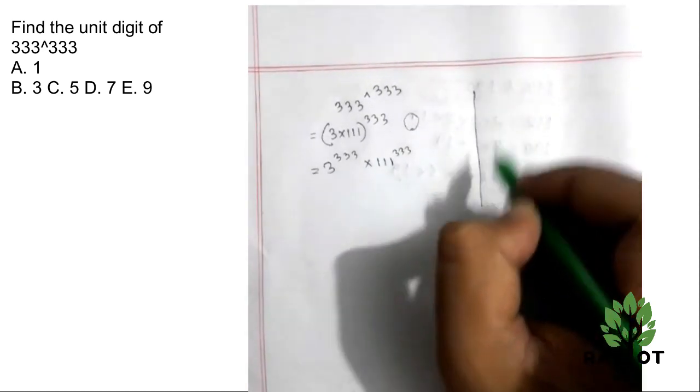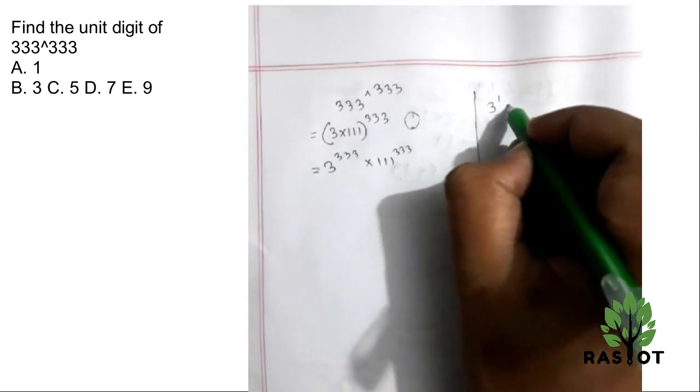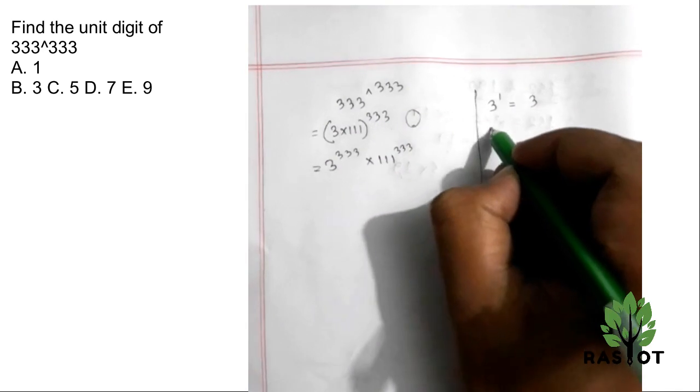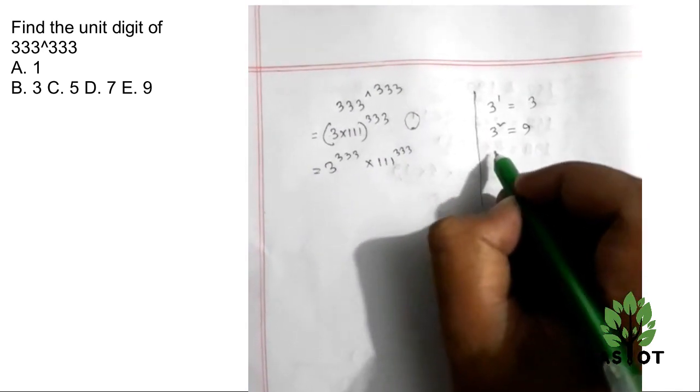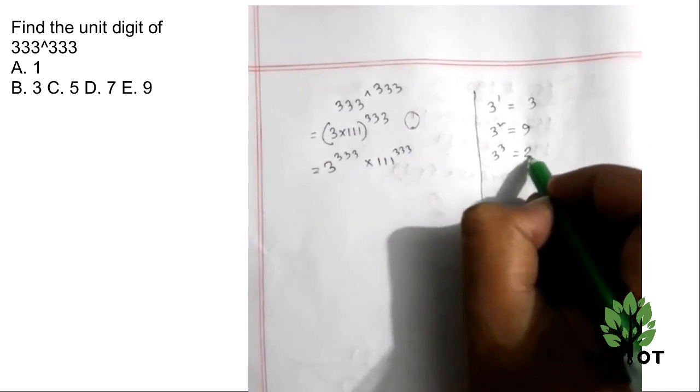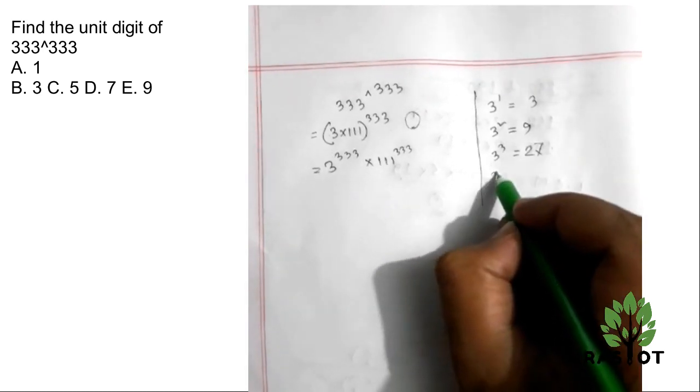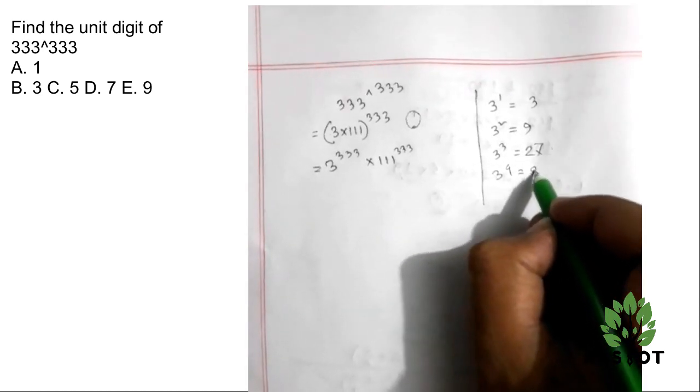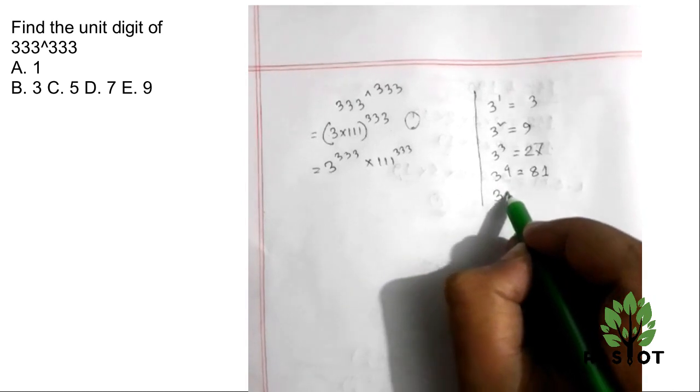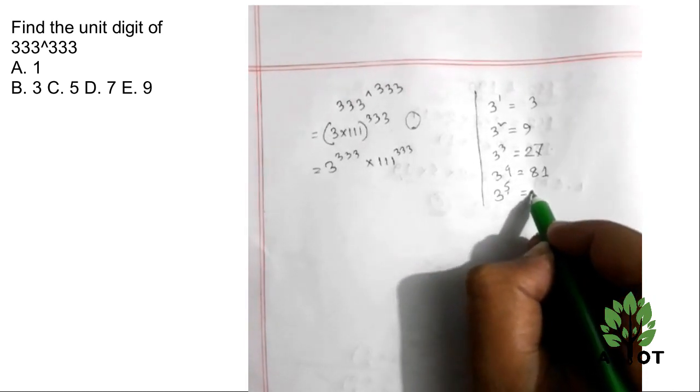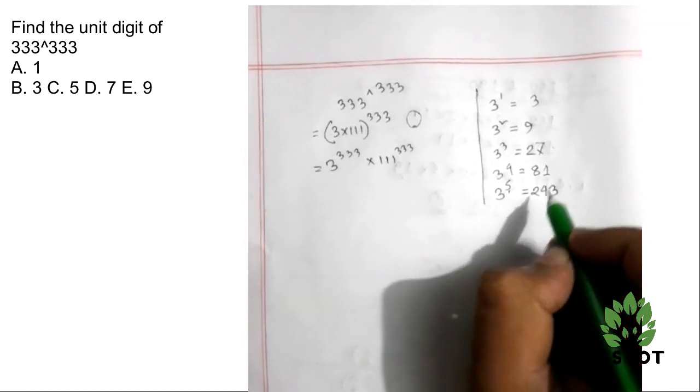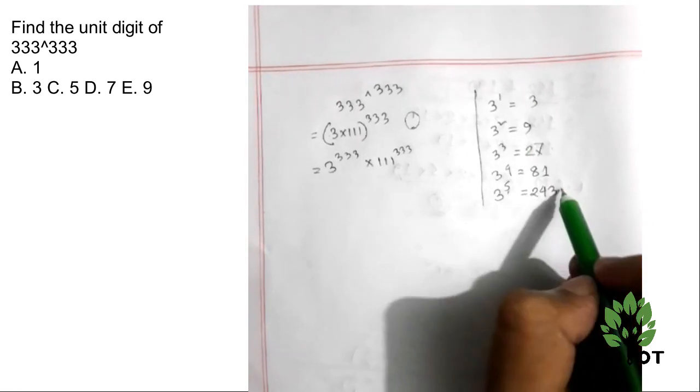The pattern of powers: 3 to the power 1 is 3, 3 squared is 9, 3 cubed is 27. Look at the unit digits. 3 to the power 4 is 81, 3 to the power 5 is 243. This is the pattern.